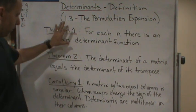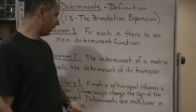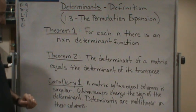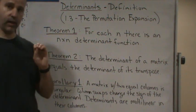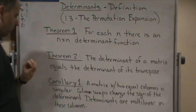It says a matrix with two equal columns is singular, just like two equal rows. So if it has two equal columns, it's singular.